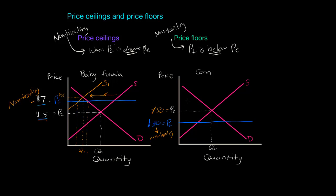But why might the government set a non-binding price floor at thirty dollars? It might be to prevent future decreases in the price below that floor price. What if at some point in the future there was an unexpected decrease in the demand for corn? We'll say demand decreases to D1. In this case the equilibrium price might fall below the floor price of thirty dollars — let's say the equilibrium price is twenty dollars. Now the thirty dollar price floor has become binding. If the demand were to decrease to D1, that price floor would have an effect and result in a disequilibrium in the market.